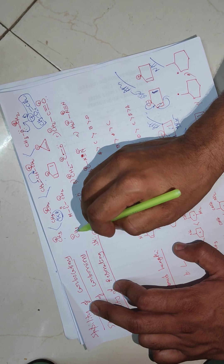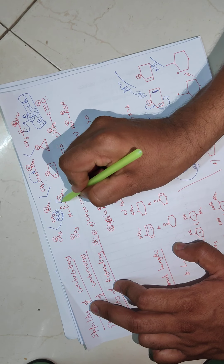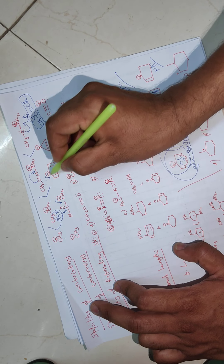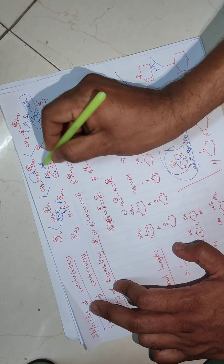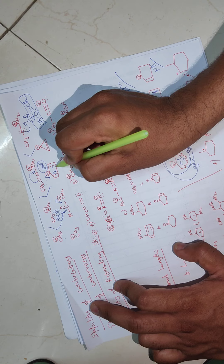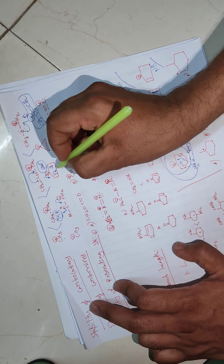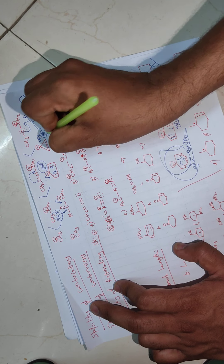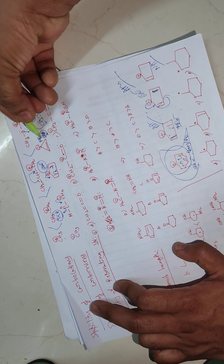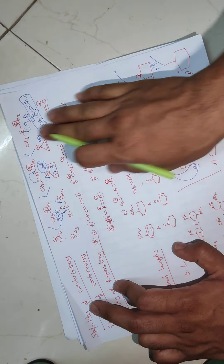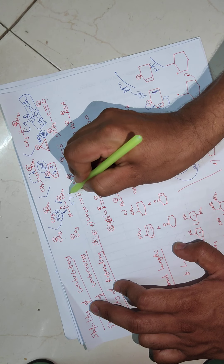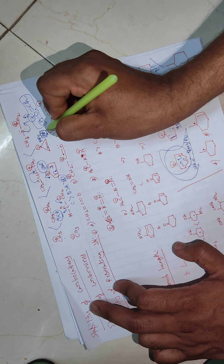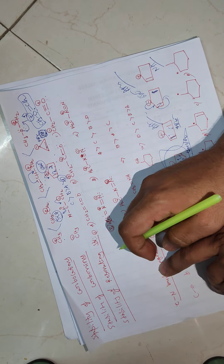For stability of carbanions: one carbanion has no stabilizing factor and is least stable. Another is stabilized by minus-M effect (resonance). Another is stabilized by resonance. One is stabilized by aromatic nature — it has 6 pi electrons and continuous conjugation, so it is an aromatic species. A species with 4 pi electrons is anti-aromatic and least stable. Among these four: the aromatic species is most stable, next the resonance-stabilized one, then the one with no stabilization, and the anti-aromatic species is least stable even though it has resonance.